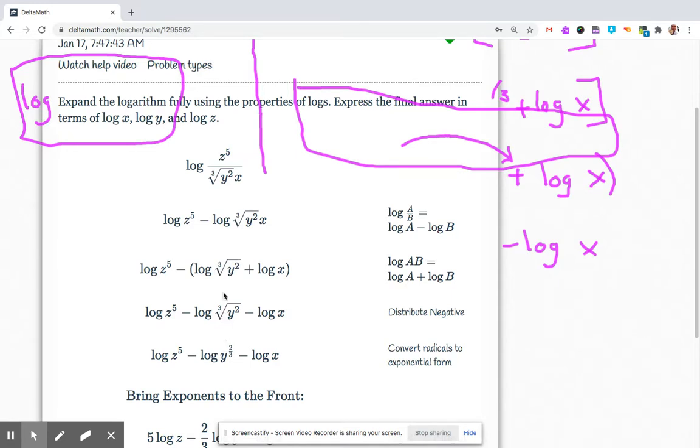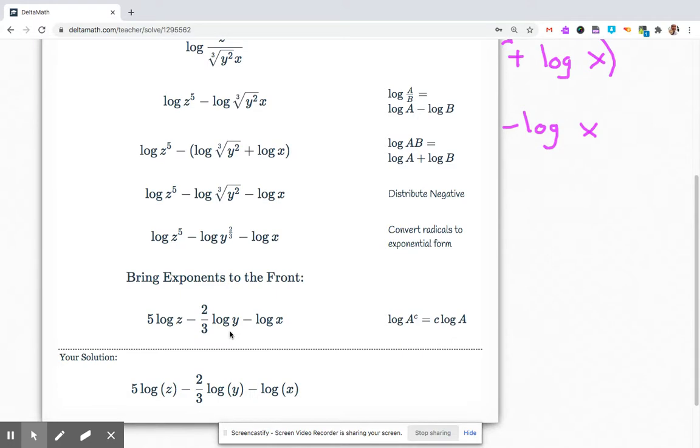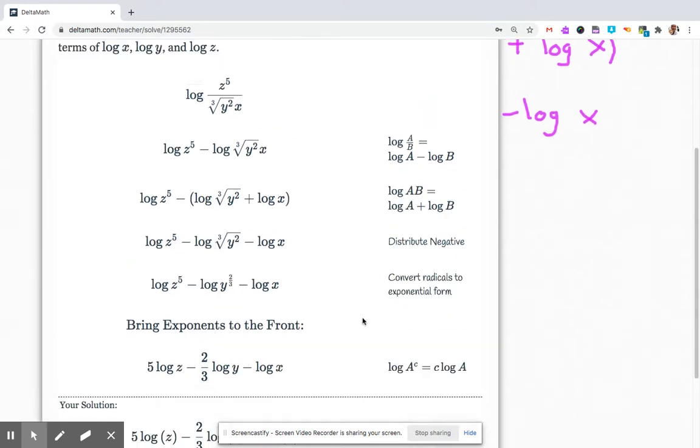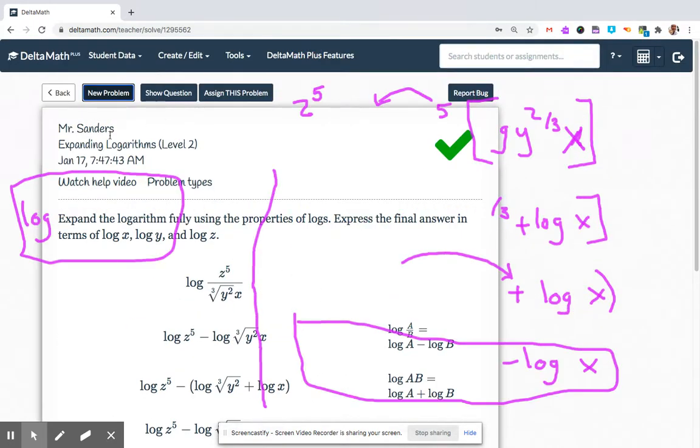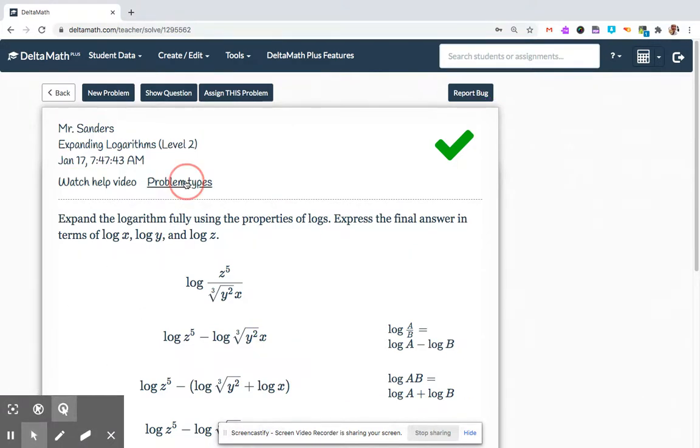They kept that cube root all the way through. When you're dealing with logarithms, it's good not to have those radicals floating around. Treat it as an exponent right off the bat. Okay. Looks like we've got some different problem types. Let's see what they are.